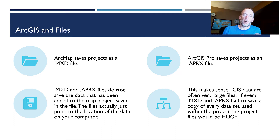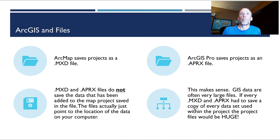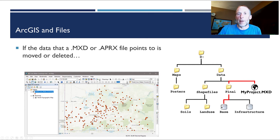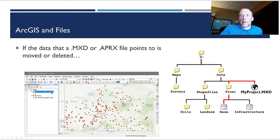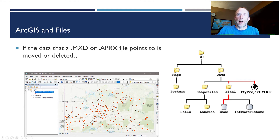This is a source of confusion for many GIS novices. For example, here's an MXD file called myproject.mxd in a folder called data. That data folder also has a subfolder called final and another called shapefiles. Inside the final folder is a geodatabase, and inside that geodatabase is a feature class called Ozark low-water crossings — the GIS data displayed as red dots on this map. GIS is not storing that data in the MXD; it's just noting where that data lives on your hard drive.